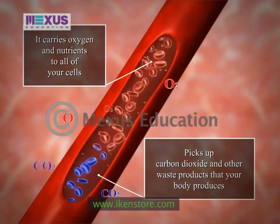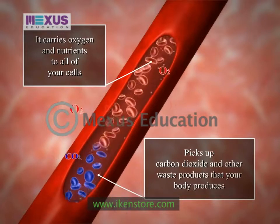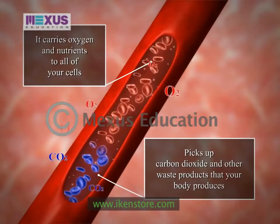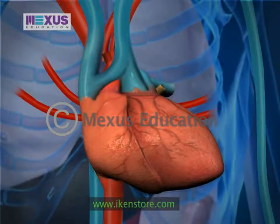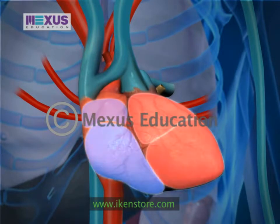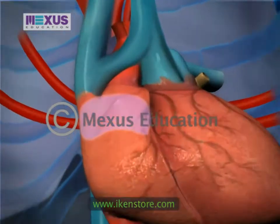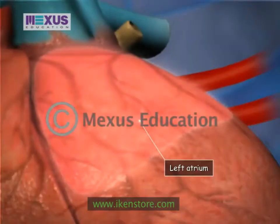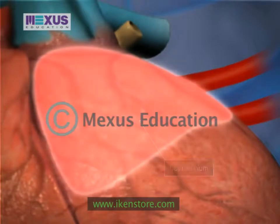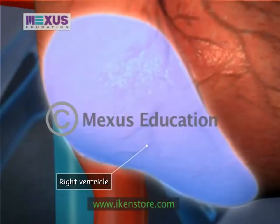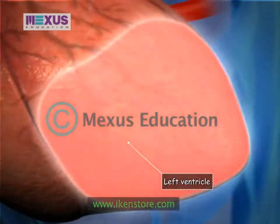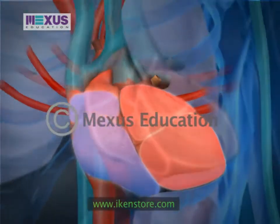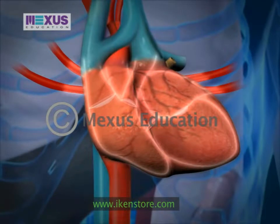These waste products that your body produces can then be disposed of. The inside of a normal heart is divided into four chambers: the right atrium, the left atrium, the right ventricle, and the left ventricle. The circulatory loop begins with blood entering the right atrium of the heart.